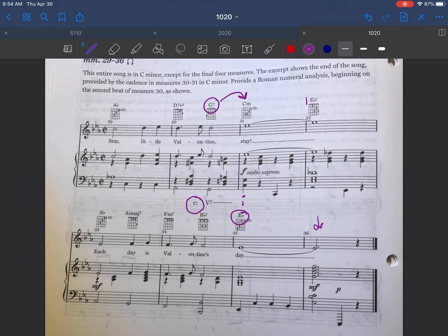In measure 32 we see an E flat 7 chord. This is an E flat dominant 7th chord. Dominant 7th chords only happen on a dominant. They do not happen on tonic. They do not happen on scale degree 3. They are only dominant function chords.